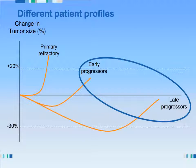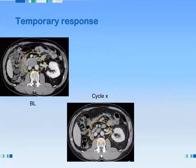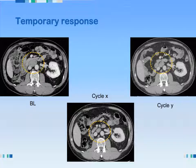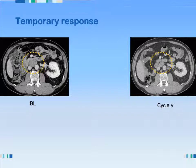These are the harder ones: patients that start by responding and then suddenly start progressing. As long as they're progressing rapidly — the slope goes up fast — they're probably easy as well because you're probably also going to be seeing this clinically. Here's an example: a lymph node between the aorta and the vena cava. Before treatment this lymph node is visible; after a certain number of cycles it decreases in size; and after more cycles it's increasing again — that's a secondary progression. Note that if you only have the first and last CT scan, you might conclude the patient is still responding.